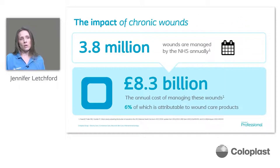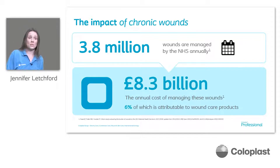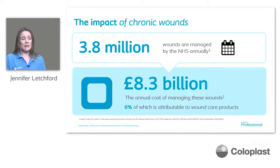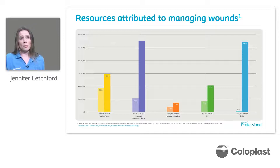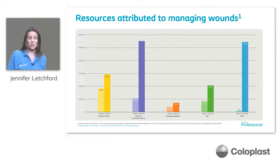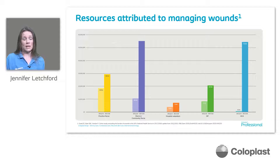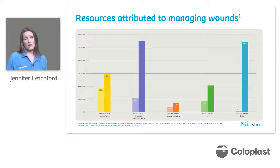The impact of chronic wounds is huge. Around 3.8 million wounds are managed annually by the NHS, and that's at a cost of £8.3 billion. We've seen a huge increase in district and community nursing time, but also healthcare assistance time in managing these wounds. So we're very much seeing these wounds being managed in primary care or community settings.